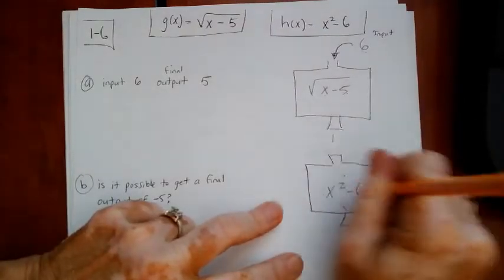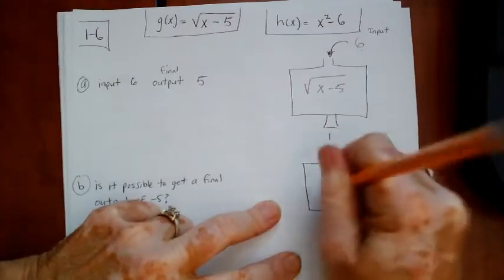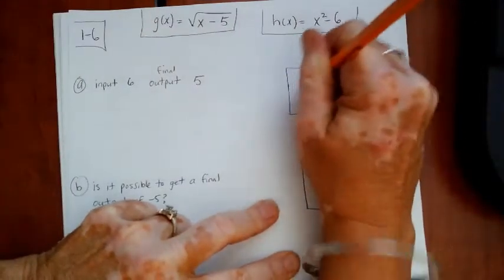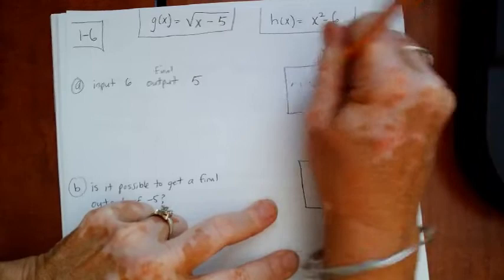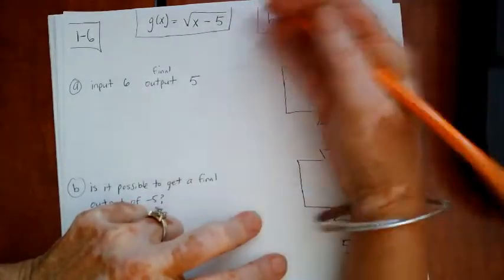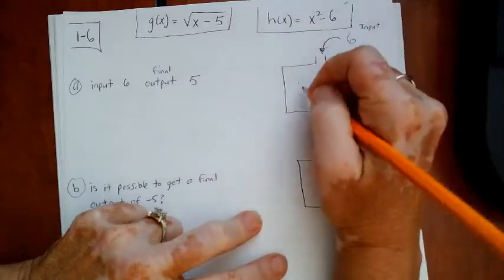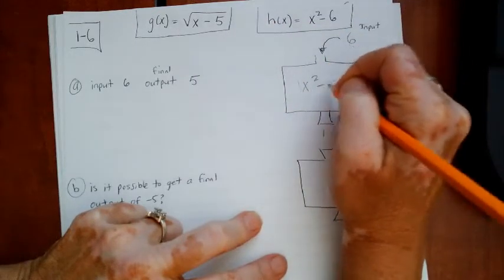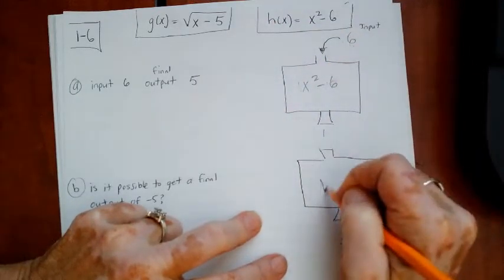So the only other thing to do is to just switch them. Because we've got to stack them. So we've already tried putting g of x on top. It didn't work. So just put h of x on top. And we're just going to verify and make sure that it works that way.